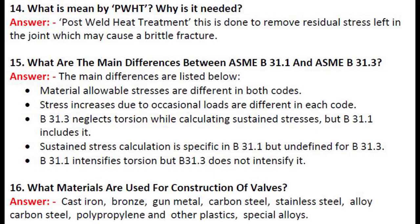Question 15: What are the main differences between ASME B31.1 and ASME B31.3? Answer: Material allowable stresses are different in both codes. Stress increases due to occasional loads are different in each code. B31.3 neglects torsion while calculating sustained stresses, but B31.1 includes it. Sustained stress calculation is specific in B31.1 but undefined for B31.3. B31.1 intensifies torsion but B31.3 does not intensify it.